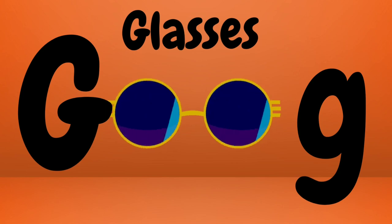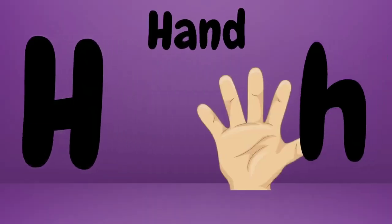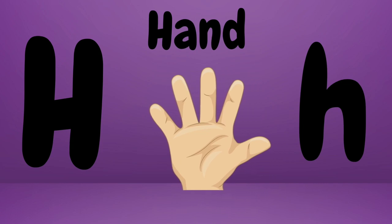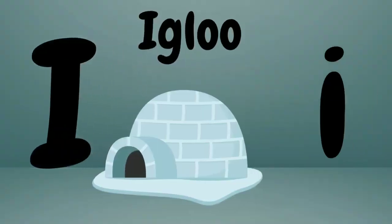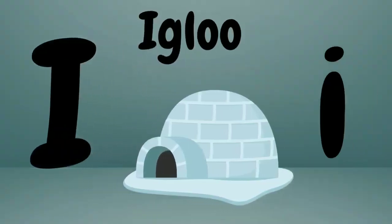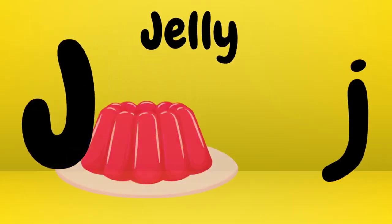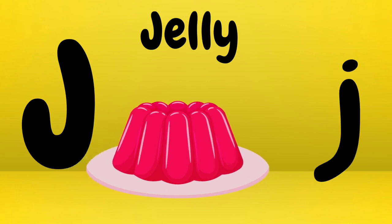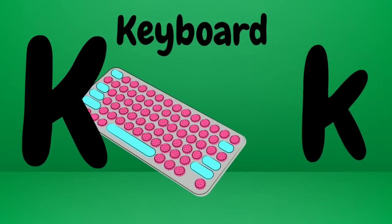Glasses, glasses — this is a glasses. H is for hand. Hand, hand — this is a hand. I is for igloo. Igloo, igloo — this is an igloo. J is for jolly. Jolly, jolly — this is a jolly. K is for keyboard.